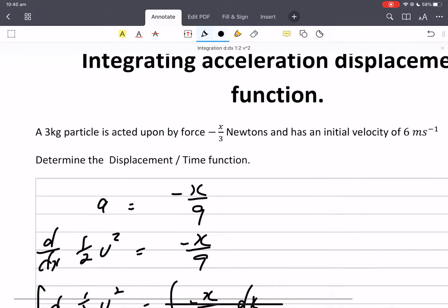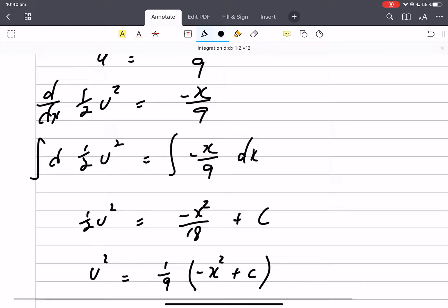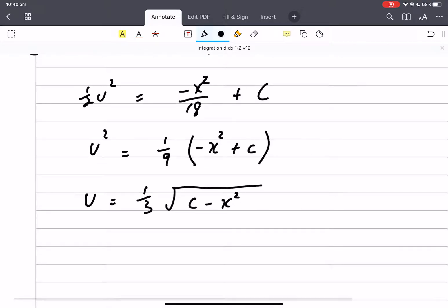And let's just assume it has initial velocity of 6. So when displacement is 0, v is 6.